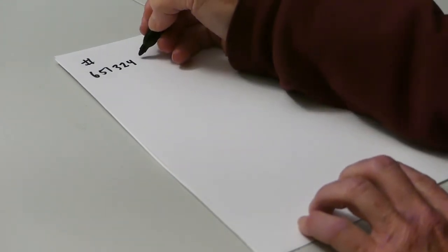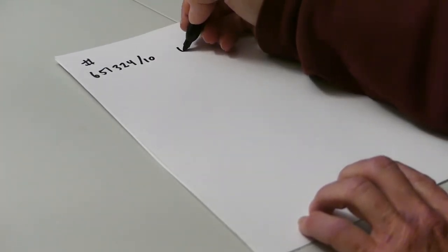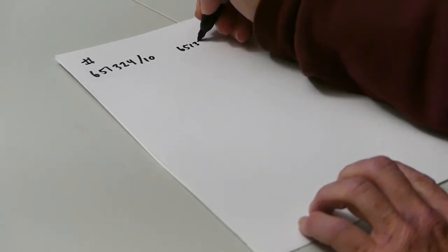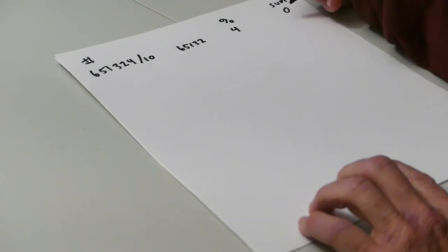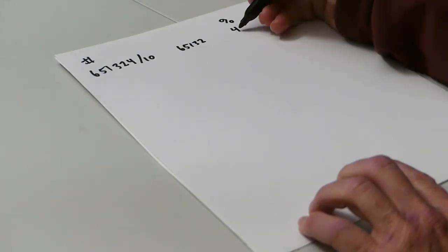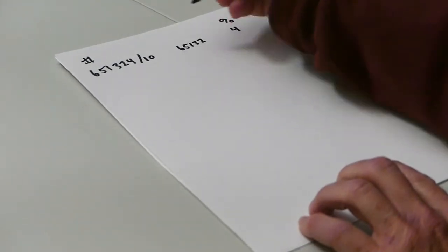The trick is to divide by 10. The quotient of that is 65132, and the remainder is 4. That's the rightmost odd place. 4 plus 0 is 4. And here are the remaining digits.